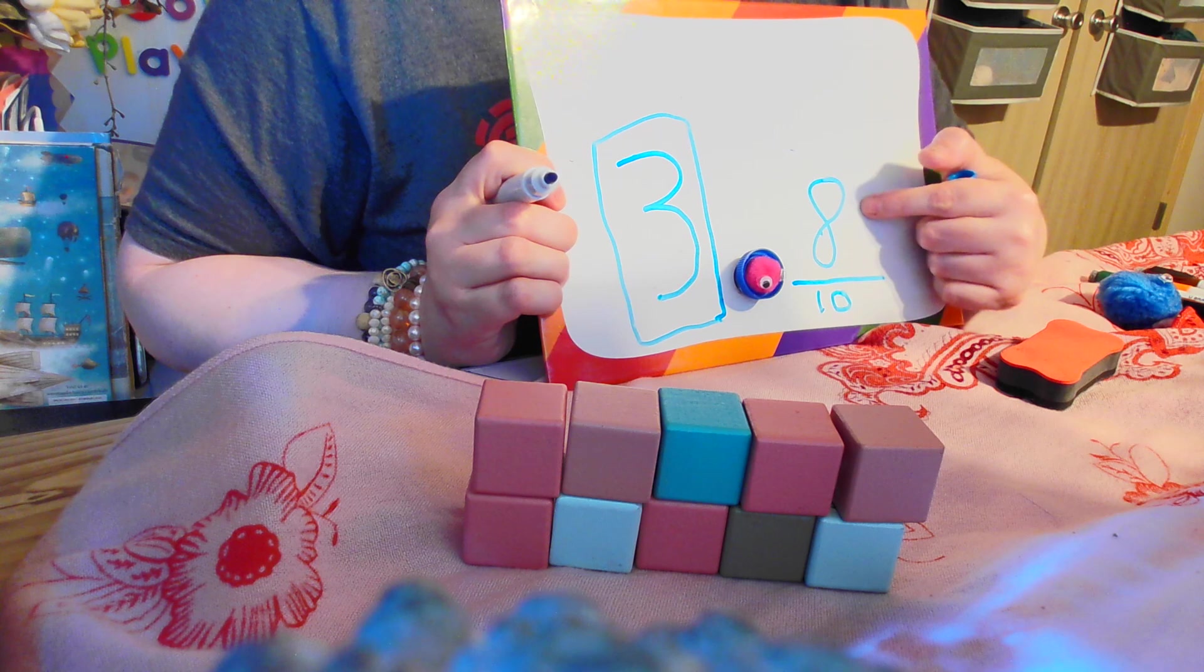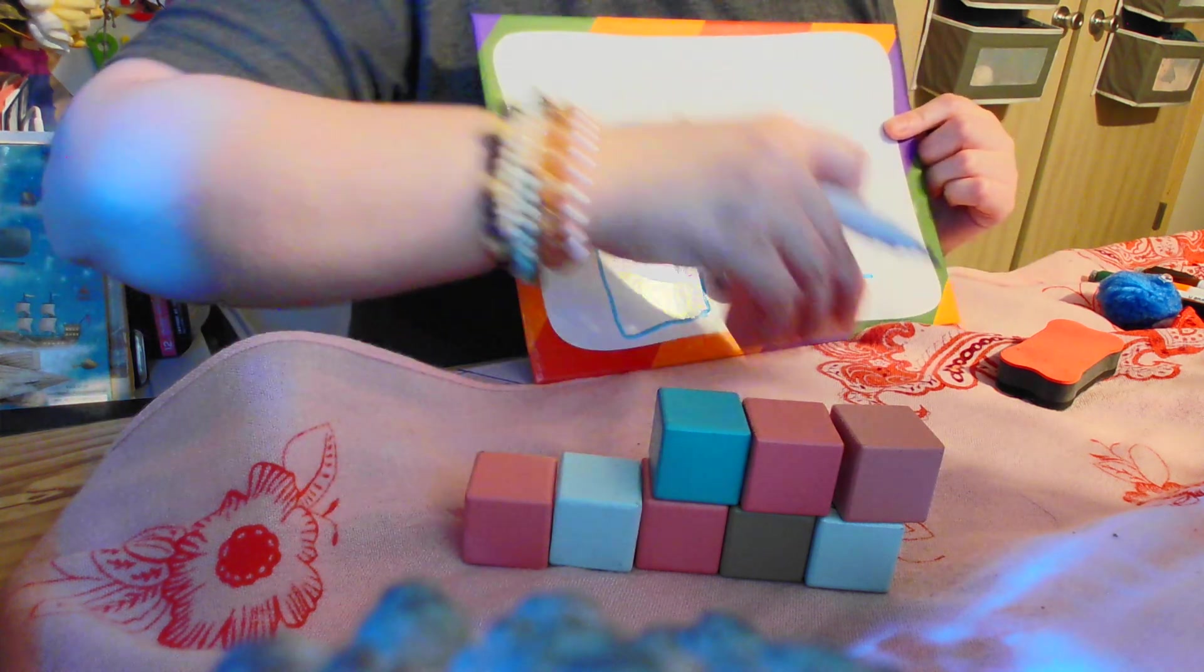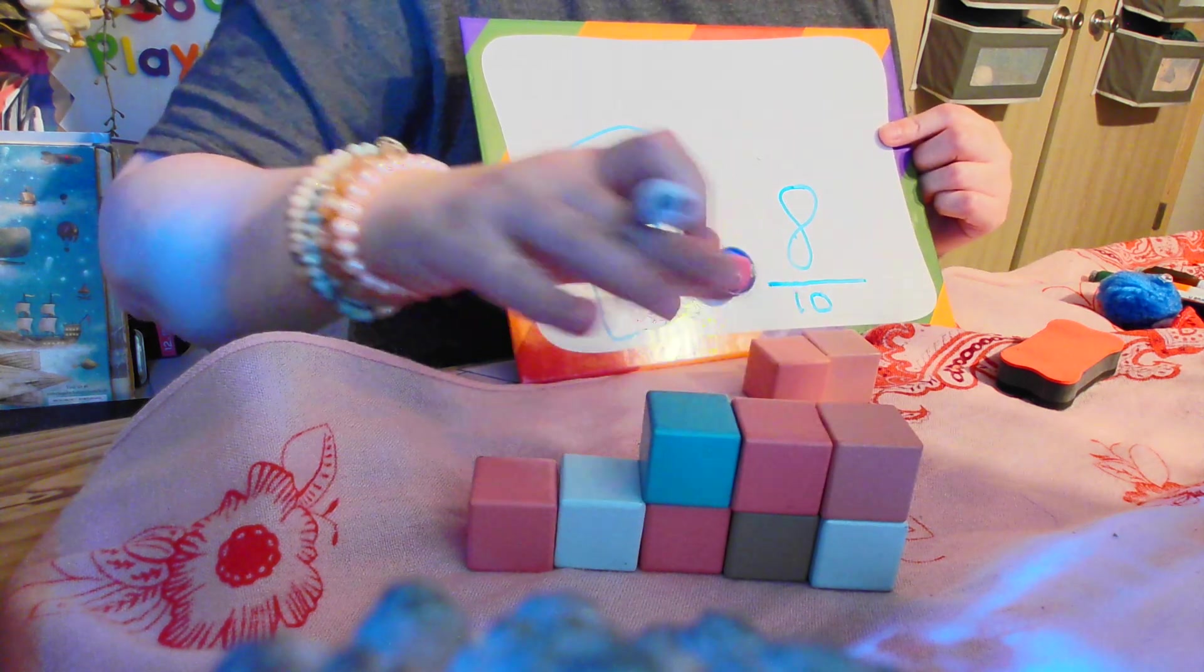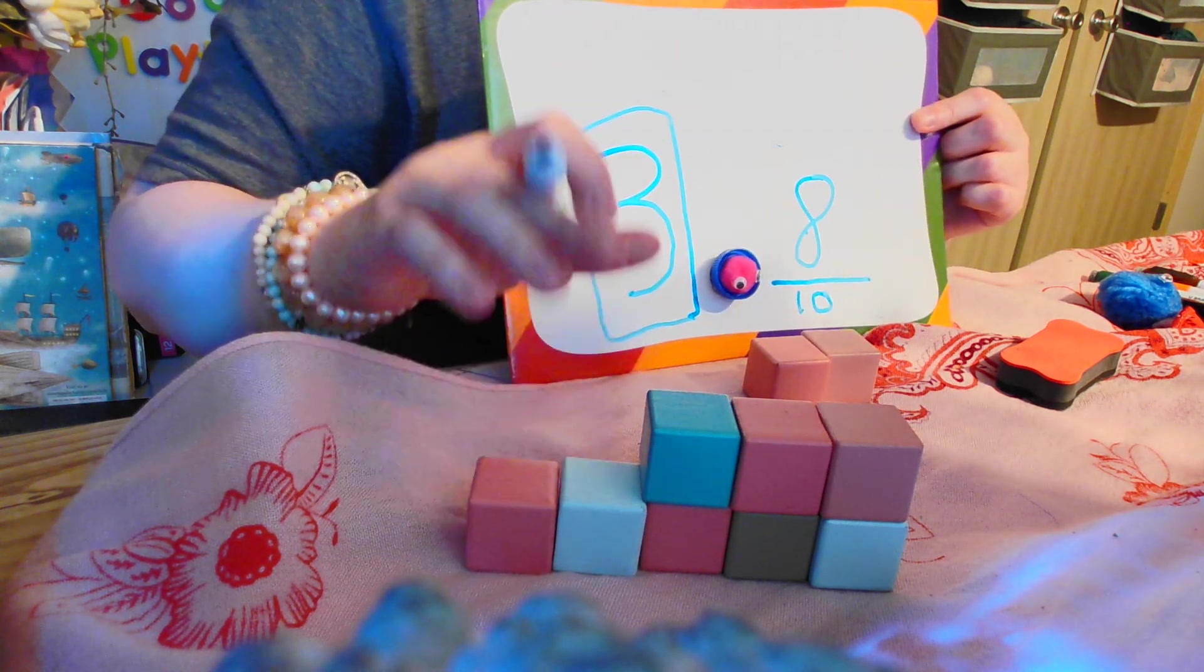We have 3.8. Well, that's closer to the number 4. It takes 10 pieces to make the number 4, and we have 8, so that's much closer. If we're trying to get to the next number, we have 8 out of the 10 pieces we need to make the number 4.